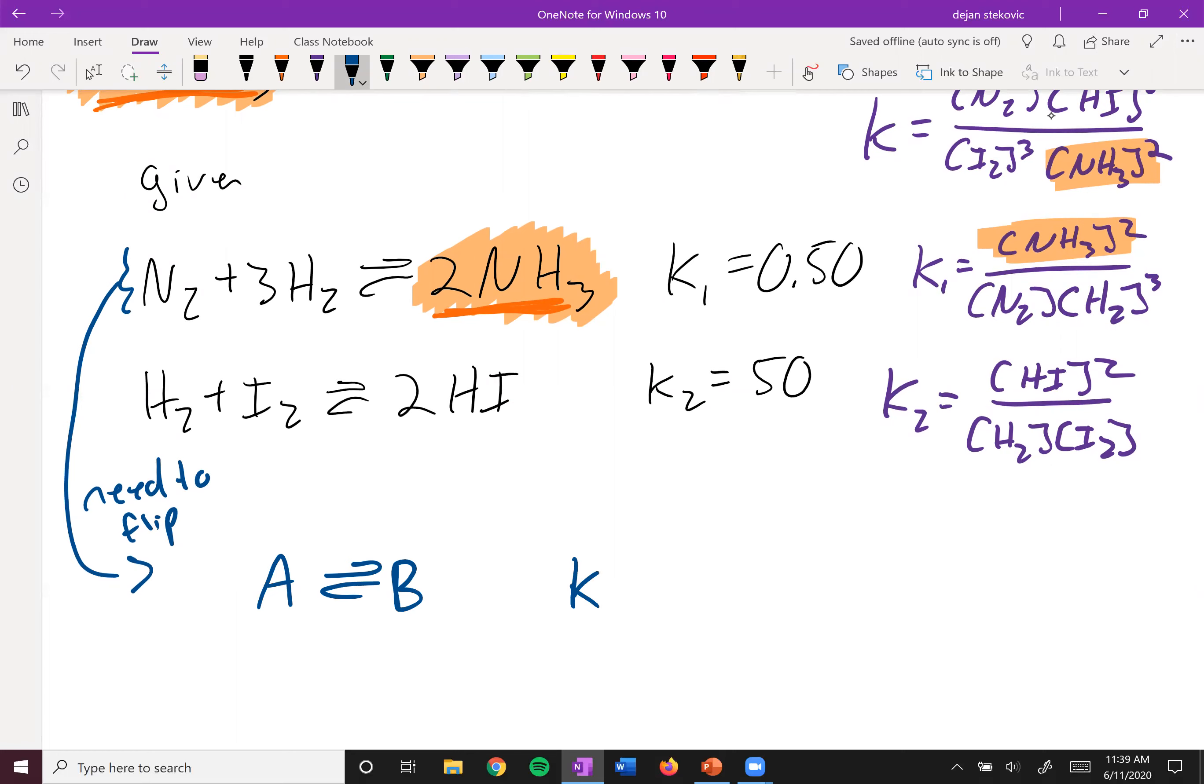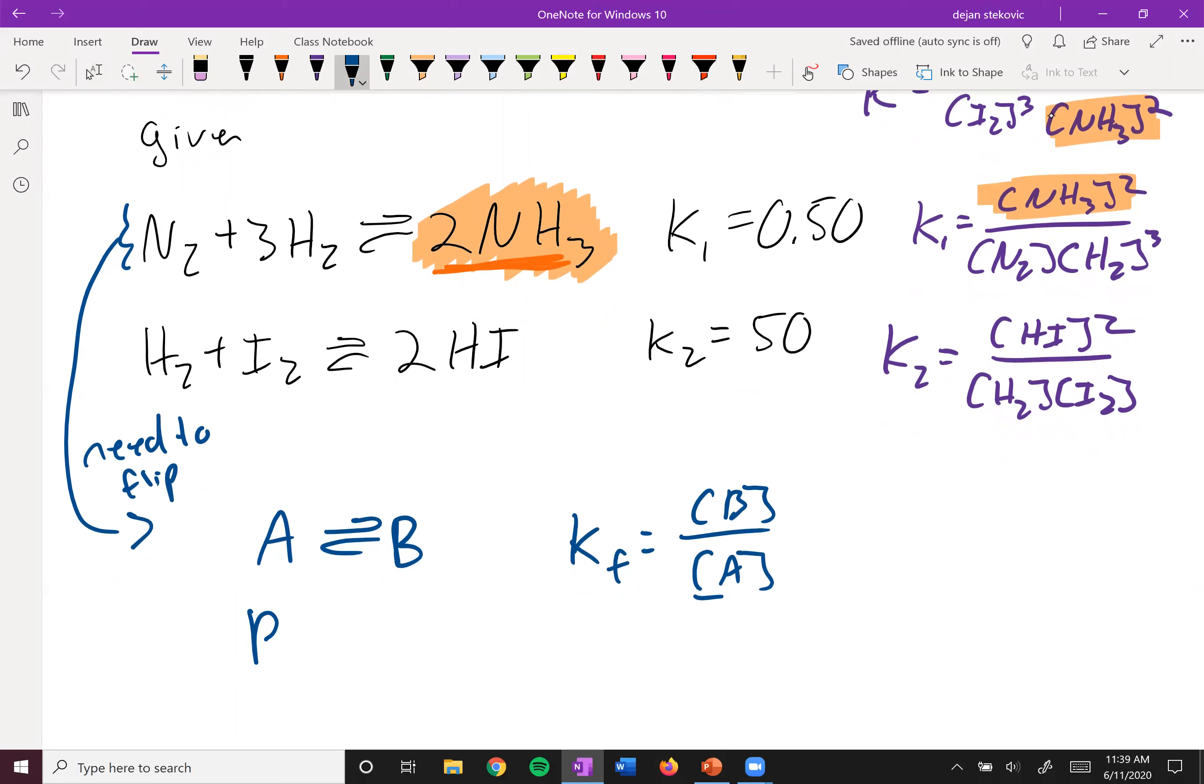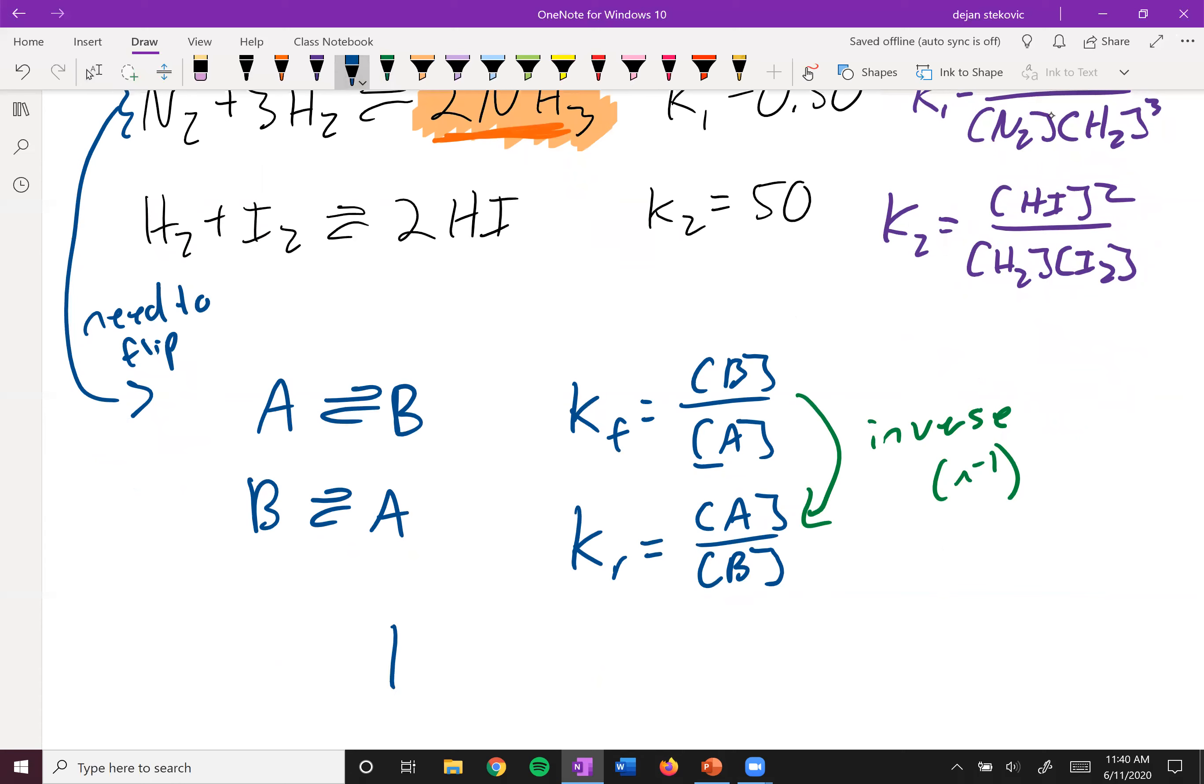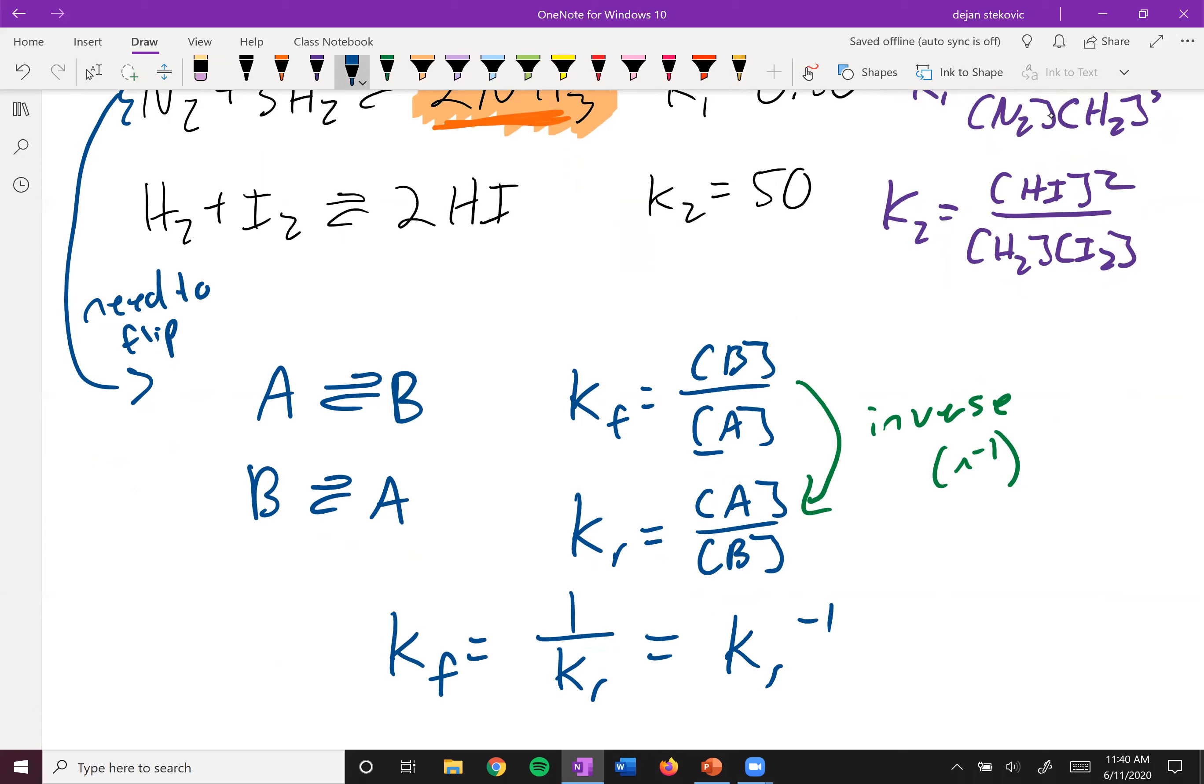So for example, if you have A to B, we'll call this K forward. This is going to be products over reactants, so it'll be K concentration, or it'll be B over A. And then when you flip this reaction, it'll be B to A. And so we'll call this K reverse. And now we'll have A over B. So to get from the top to the bottom, what we have to do is we have to take the inverse of this equation. So that means raising something to the negative one. So your K forward will equal to one over K reverse, or K reverse to the negative one.